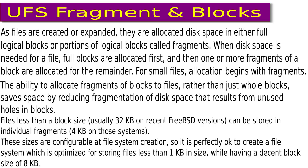As files are created and expanded, they are allocated disk space in either full logical blocks or portions of logical blocks called fragments. When disk space is needed for a file, full blocks are allocated first, and then one or more fragments of a block are allocated for the remainder. For small files, allocation begins with fragments. The ability to allocate fragments of blocks to files rather than whole blocks saves space by reducing fragmentation from unused holes in blocks.